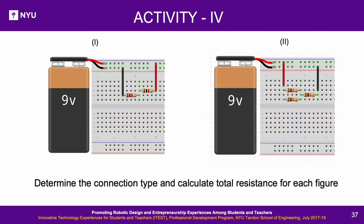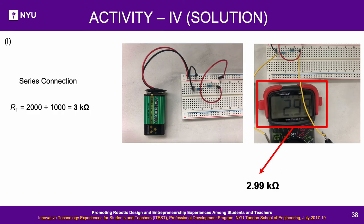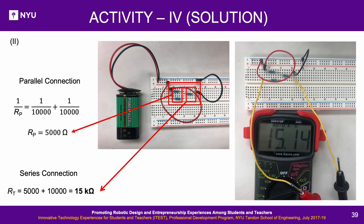Activity 4: Determine the connection type and calculate total resistance for each figure. Solution — Figure 1: 2 kΩ and 1 kΩ connected in series; total resistance = 3 kΩ. Figure 2: Two 10 kΩ resistors in parallel reduce to 5 kΩ, and this parallel combination is in series with another 10 kΩ resistor, making the total resistance 5 kΩ + 10 kΩ = 15 kΩ.